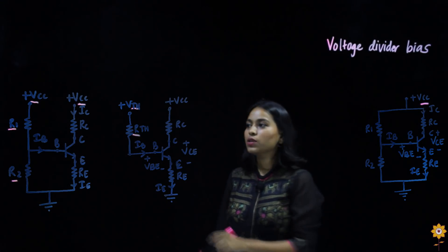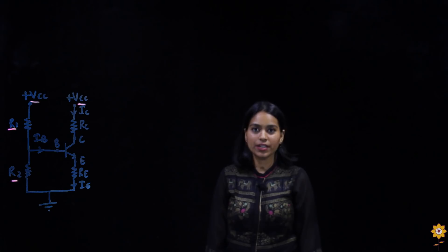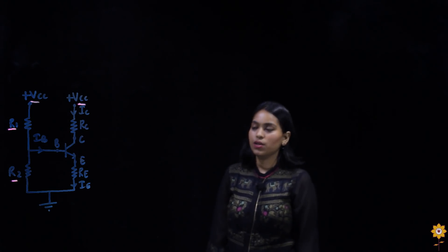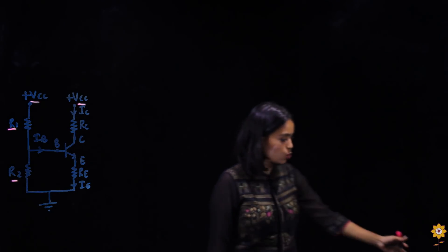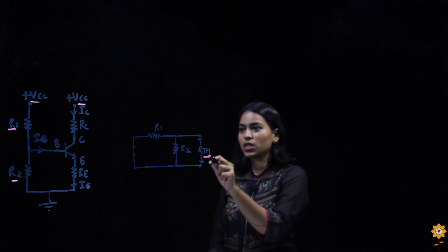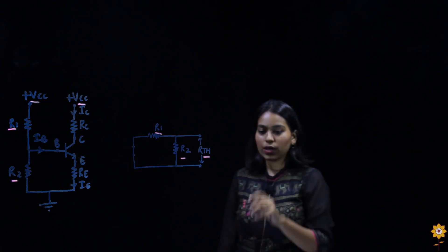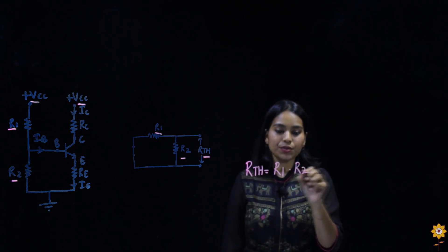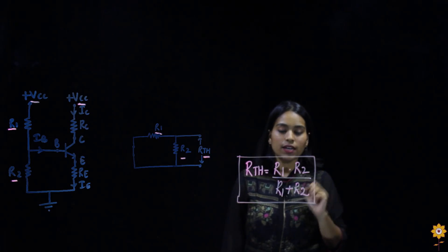To find Rth, Thevenin's equivalent resistance, we short circuit the voltage sources and open circuit the load. According to our circuit diagram, the load is open circuited, giving us the equivalent circuit to calculate Rth. Rth is measured between two points where only R1 and R2 are present in parallel. So Rth equals R1 times R2 divided by R1 plus R2.